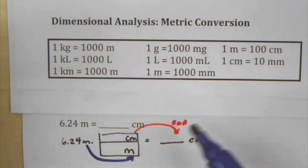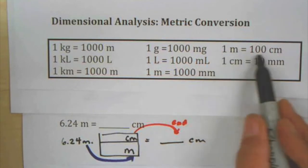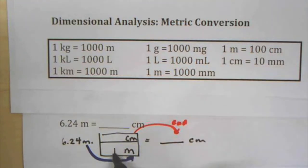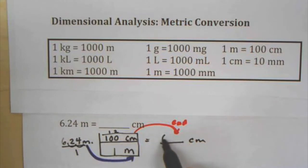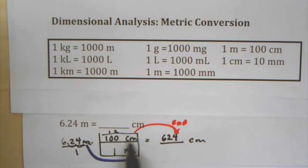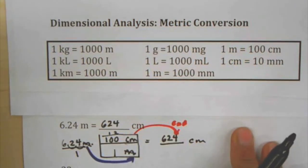I look at the ratio: one meter is 100 centimeters, so it's 1 meter and 100 centimeters. Estimating: about 6 times 100 is close to 600. Multiplying by 100 moves the decimal two places, giving 624. Meters in the numerator and meters in the denominator cancel, leaving 624 centimeters. You can start to get a sense of the relative sizes — lots of centimeters make up 6 meters.